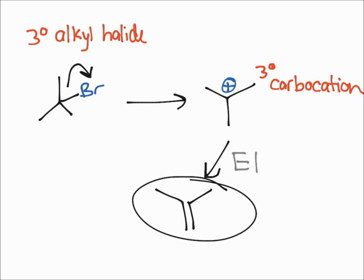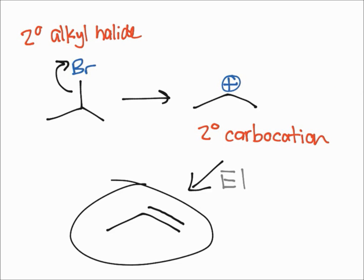It's important to remember that going back to this secondary carbocation, rearrangements can occur because it's a carbocation. Remember what we talked about: the hydride shifts and the methyl shifts can occur with secondary carbocation to make it more stable, and if that occurs you will get a different product.